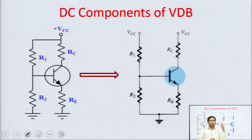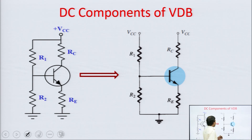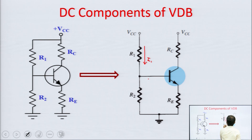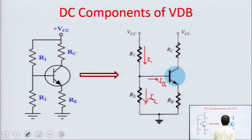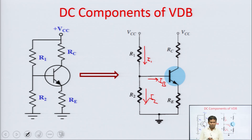To discuss the operating point or DC analysis of this circuit, there are two types of analysis. The complication of this circuit is that when current I1 comes in, it is divided into two parts: one component is IB and the other is I2. Due to this current division, the analysis of this circuit becomes complicated.